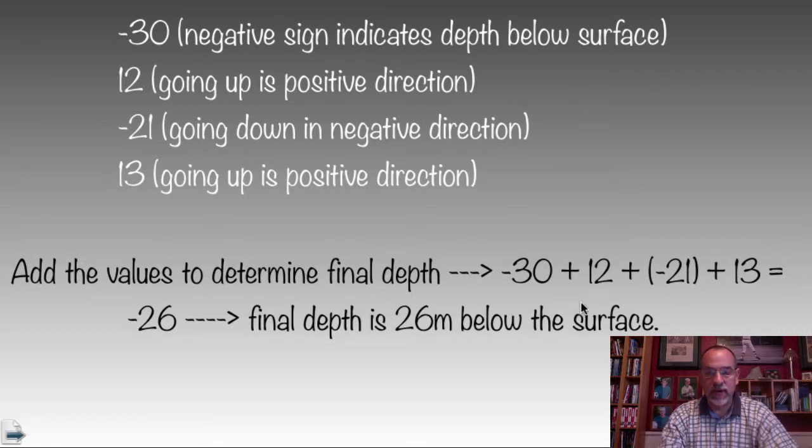So we would add all the positive numbers together first. That's 25. We would add the negative numbers together. That's 51. And then we find the difference between those two, which is 26. And the 51, which was negative, is larger in value than the 25. So the final answer gets a negative value.